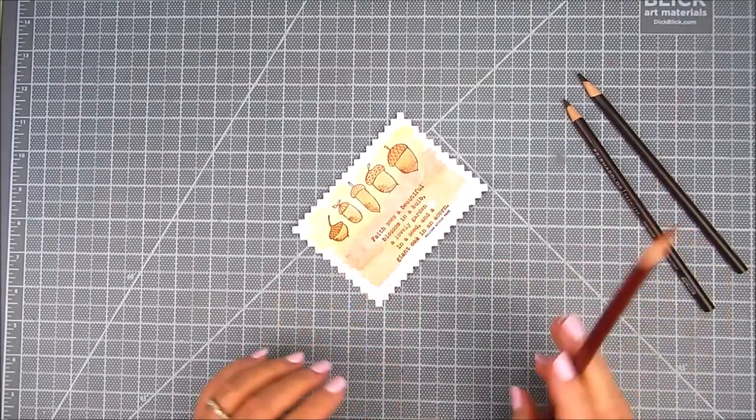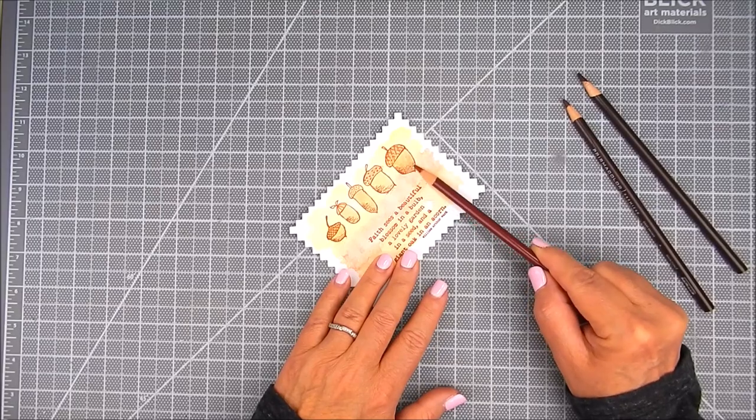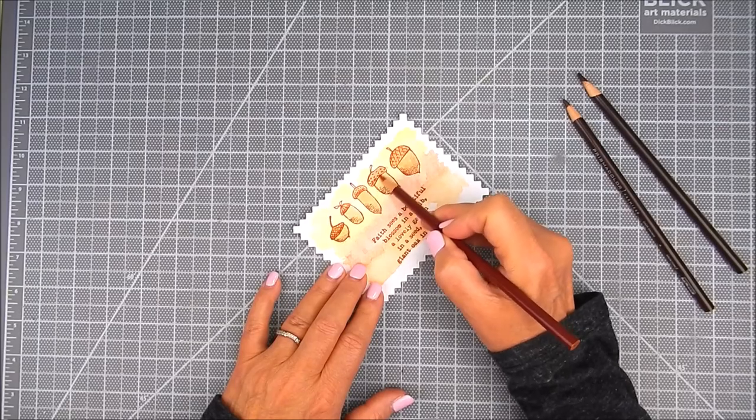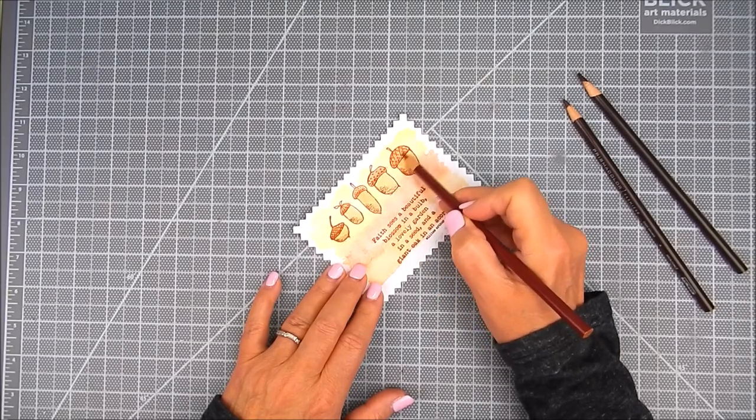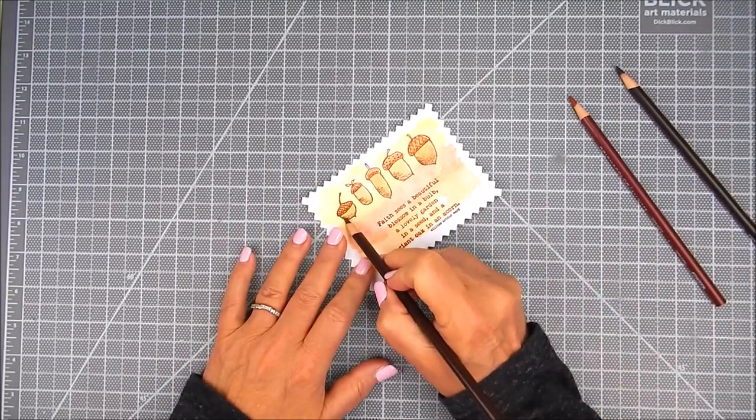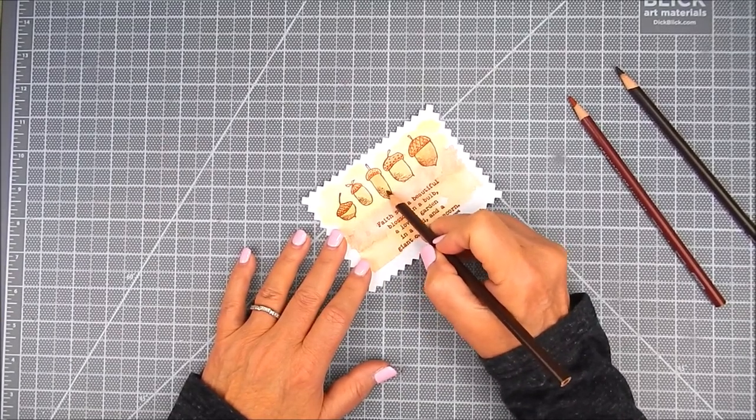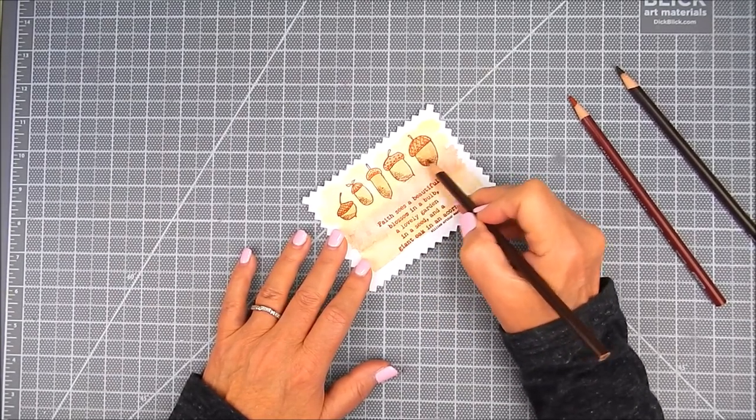I hold a very sharp pencil sideways to get light blending. If I didn't have watercolor paper and had regular cardstock, this would blend a little better with the pencils.